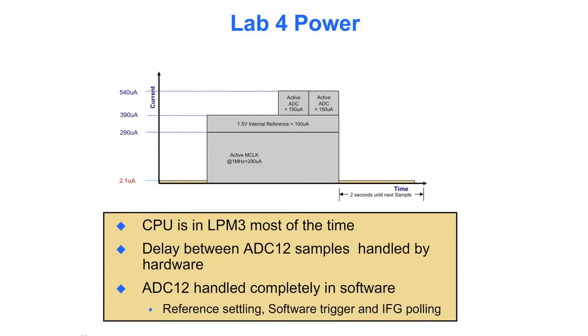Lab 4 power is going to be significantly less than Lab 3 was, primarily because we're using the timer to do the 2 second delay. So instead of being active at 1 MHz the entire time, drawing 290 microamps, for the majority of those 2 seconds, we'll be down at 2.1 microamps. So the CPU is in low power mode 3 most of the time.